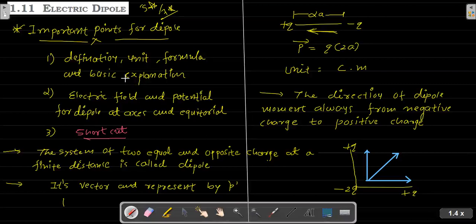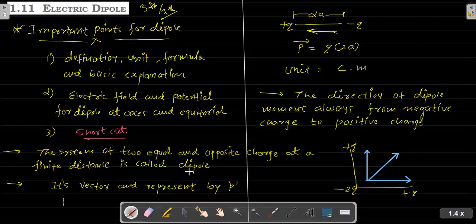What is a dipole? The important points are: the definition, the unit, the formula, and a basic explanation. Then we study the electric field and electric potential of the electric dipole. We will study the potential in chapter 2, and the field in this video. We will also study the axis and equatorial points, and a shortcut method to remember the electric field.